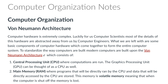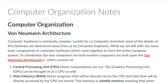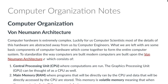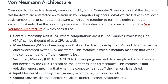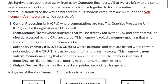Hello and welcome to my video. Today I will be discussing computer organization and more specifically the von Neumann architecture. A computer could be thought of as a device that takes input, processes that input, and then produces some output. And to do that, the computer uses five main devices.